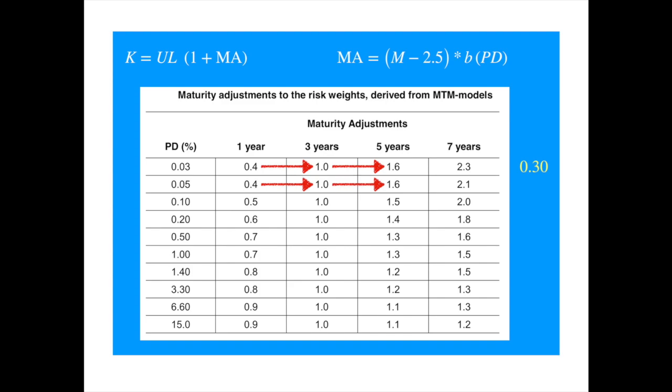Now, for a probability of default of 1%, increasing the maturity from 1 year to 3 years and from 3 years to 5 years, both maturity increases increase the requirement by the same rate. But the value of the slope is smaller at 0.15 per year.